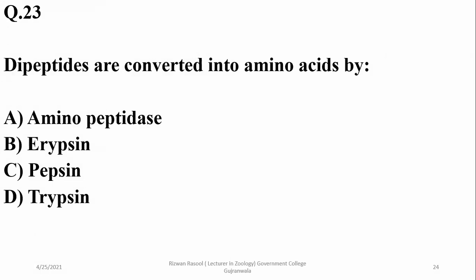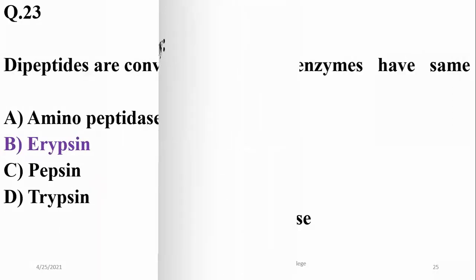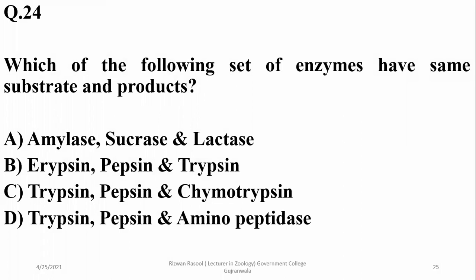Dipeptides are converted into amino acids by erepsin, which is a dipeptidase enzyme that converts dipeptides into amino acids. Which of the following set of enzymes have the same substrate and product? Trypsin, pepsin, and chymotrypsin all act on proteins to convert them into polypeptides and peptones, so they have the same substrate as well as products.